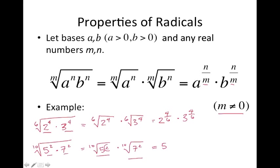So this becomes 5, exponent inside becomes a numerator, so 2 over 10 times 7, exponent inside becomes a numerator, 2 over 10.